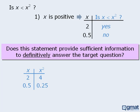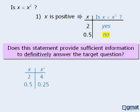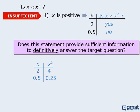So x equals 2 and x equals 0.5 both satisfy the condition in statement 1 that says x must be positive. However, in one case the answer to our target question is yes, and in the other case the answer is no. Since we cannot definitively answer the target question, statement 1 is not sufficient.